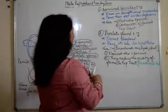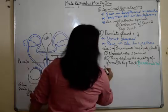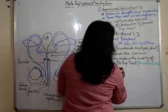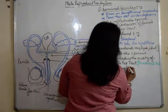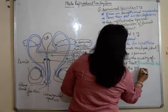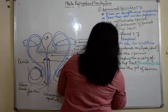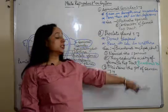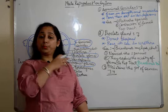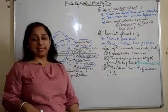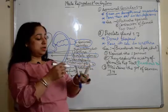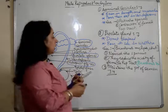Then they also maintain, this secretion also maintains the pH of semen which is 7.4, which is maintained by the secretion from prostate glands. So this is the functions of the secretions from the prostate gland.